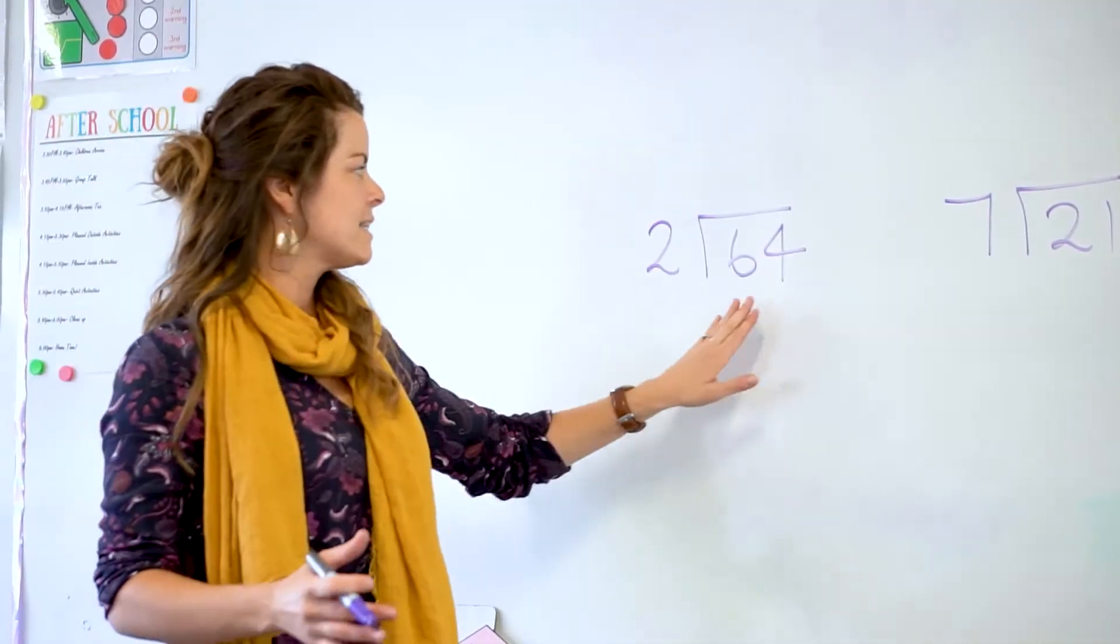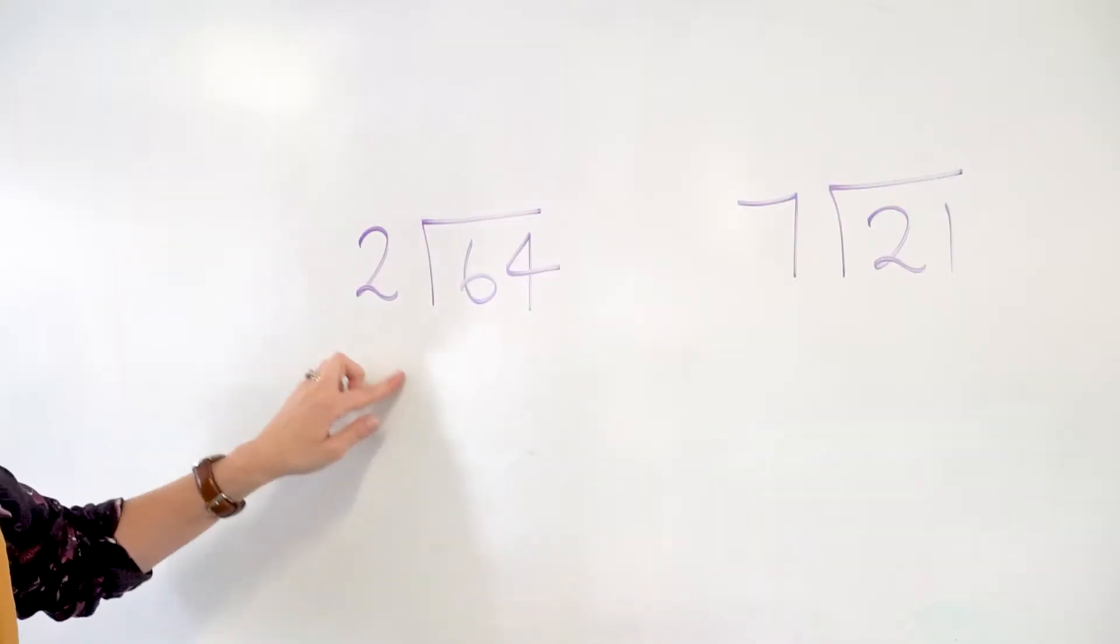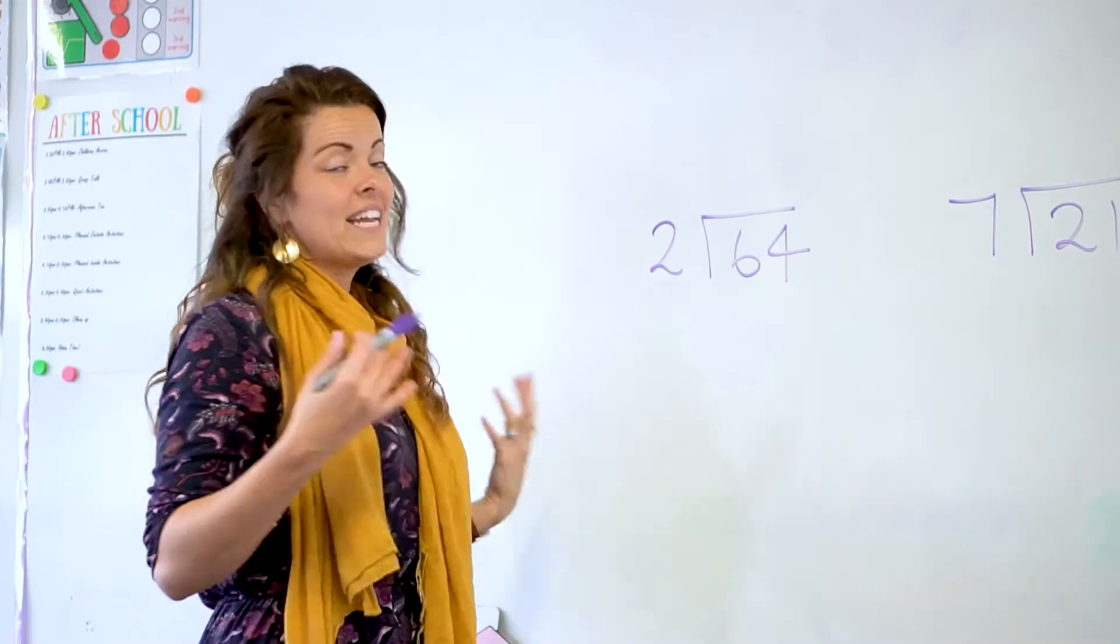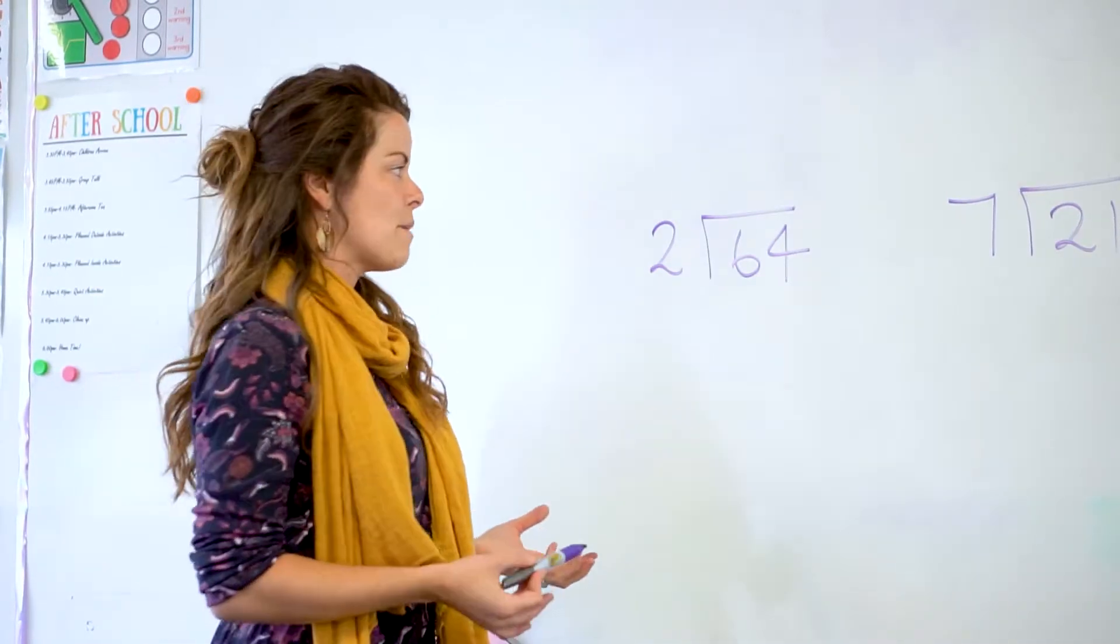The first thing we look at is 64 divided by 2, or we ask how many times would 2 go into 64. This is very reliant on multiplication, like any division problem. If they have a strength in multiplication they can definitely use this to figure this problem out.